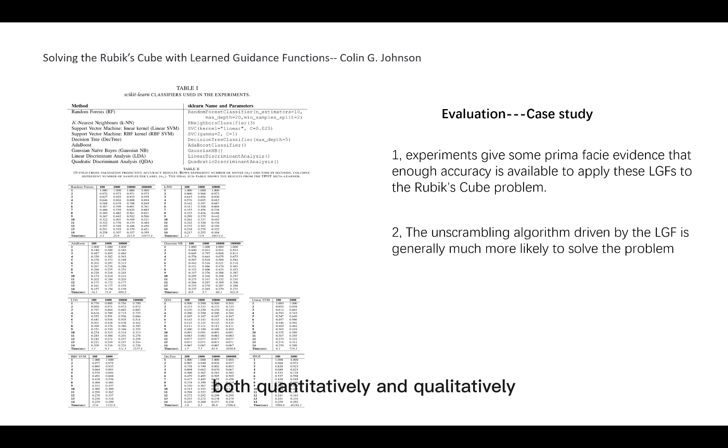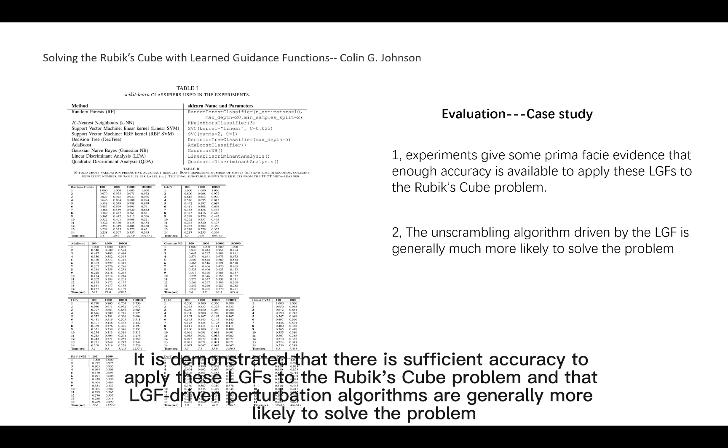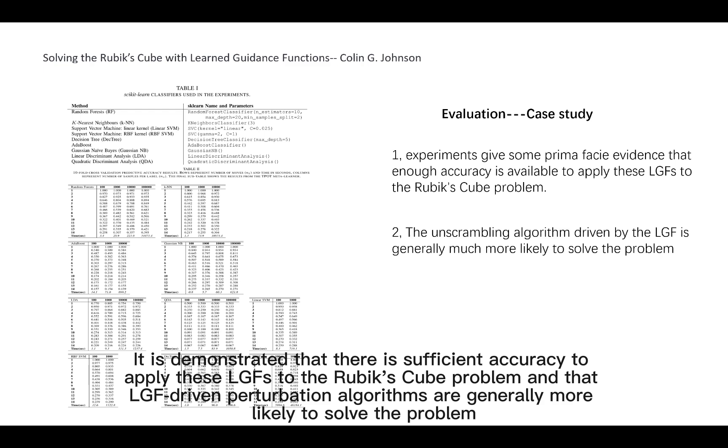This article evaluates two experiments, both quantitatively and qualitatively. It is demonstrated that there is sufficient accuracy to apply these LGFs to the Rubik's Cube problem and that LGF-driven perturbation algorithms are generally more likely to solve the problem. It is also evaluated in terms of the percentage of successful trials and the average number of moves required to reach the target state.